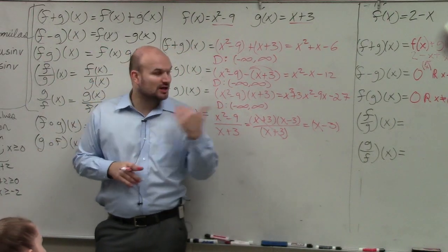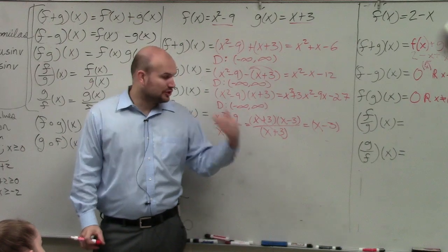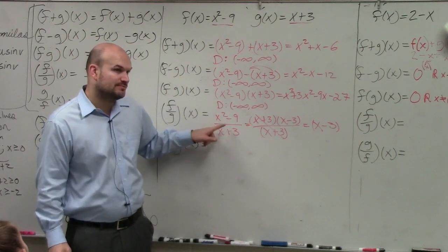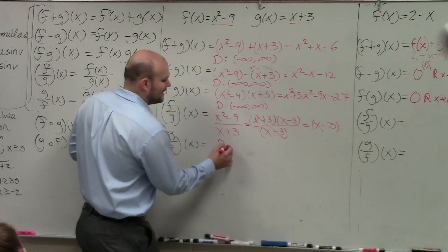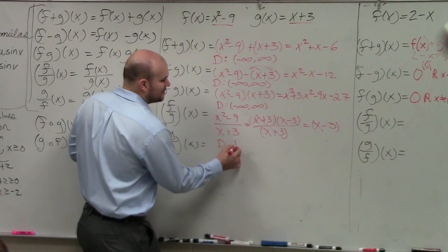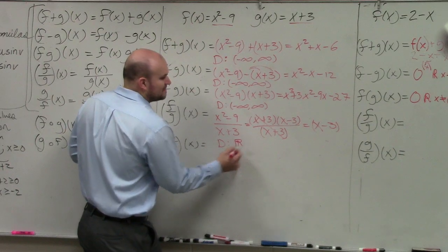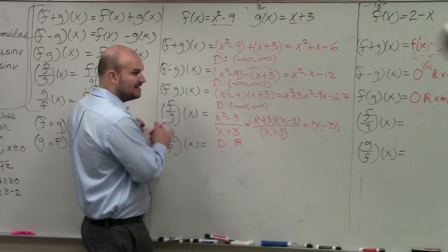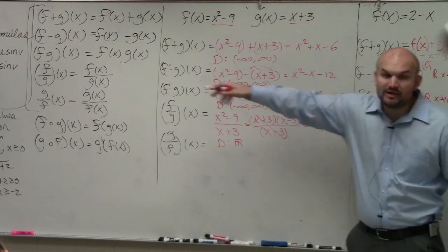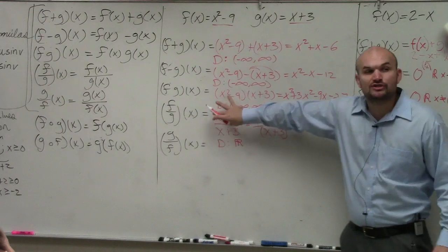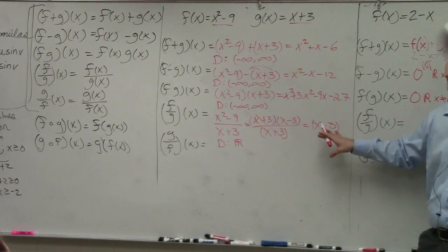However, when you are identifying the domain, your domain is still going to go back through your original function. You're going to use this original function. So my domain is going to be all real numbers, except when does x, when does my, you guys notice, now we have a constraint, right? My denominator cannot equal 0. So when does my denominator equal 0 to my original problem? Don't worry about the simplified answer in this case,